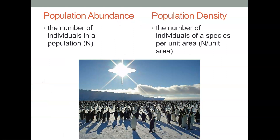When looking at populations, we want to examine two things: abundance, which is the overall number of individuals, and population density — the number of individuals per unit area. For example, looking at humans in San Diego, we have a very sparsely populated area. The city has between 1 and 1.5 million people, but the population density is really quite low because there are very few high-density buildings, few duplexes, and many single-family homes spread over a large area.